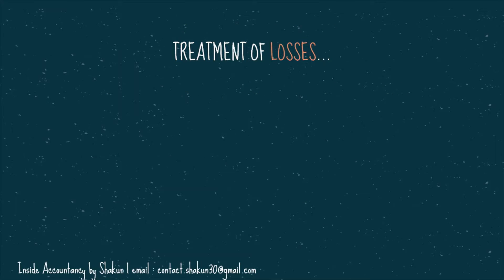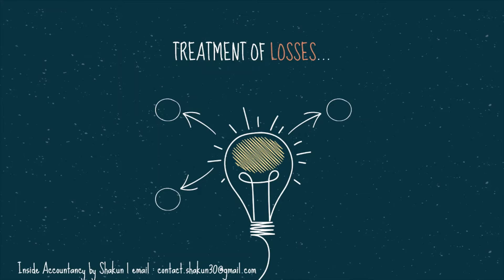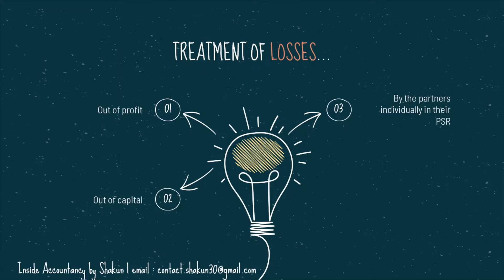Let us talk about the treatment of losses. These losses may include deficiencies of capital, which are paid first out of profit, then out of capital, and if necessary, any further losses may be paid by the partners individually in their profit sharing ratio. According to Section 48a, if there are any losses at the time of dissolution, profit should be used first. If profits are less, capital is used. And finally, if even the capital is insufficient, the partners can individually share them in their profit sharing ratio.